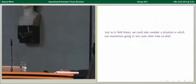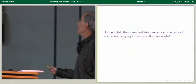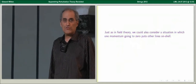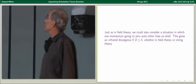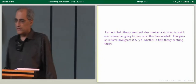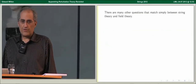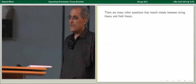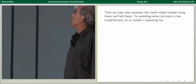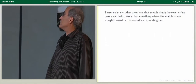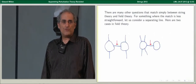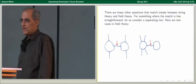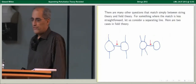Just as in field theory, we can consider special cases where one momentum going to zero puts other lines on shell, and we'll get the same infrared divergences, whether in field theory or string theory. There are a lot of other questions that match in a straightforward way between string theory and field theory. For something where the match is less straightforward, let's consider a separating line, and I've drawn two cases in field theory.